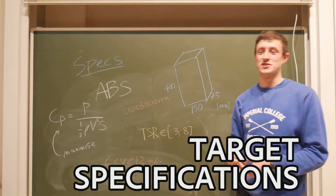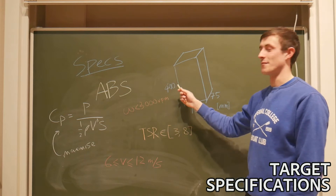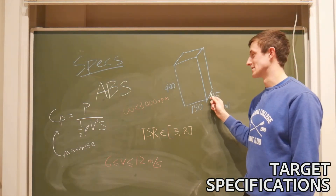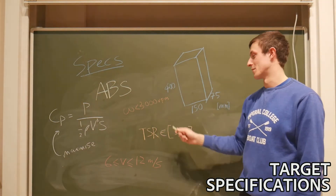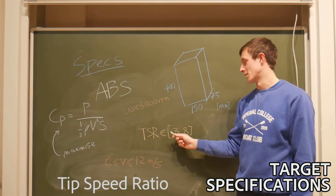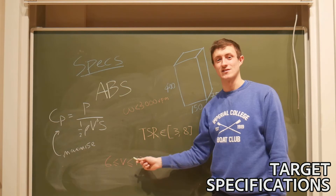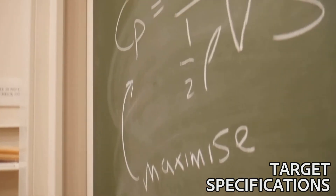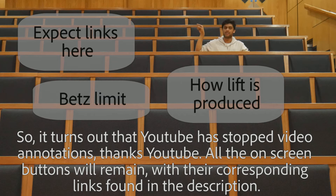The turbine must be produced out of one complete piece of ABS plastic and be printed in a box measuring 400 by 150 by 75 millimeters. The maximum angular velocity must not exceed 3000 RPM and the TSR should be between 3 and 8. The wind turbine will be tested in a wind tunnel with air speeds between 6 and 12 meters per second. Our goal with the wind turbine is to maximize the power coefficient.